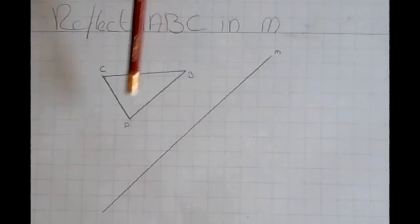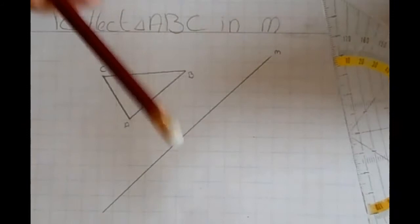If you look at the triangle you see triangle A, B, C and mirror line M. We are going to mirror it in this line. For this we need a protractor triangle and a pencil.